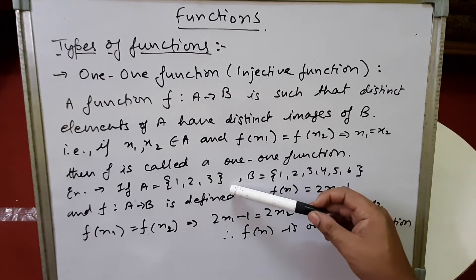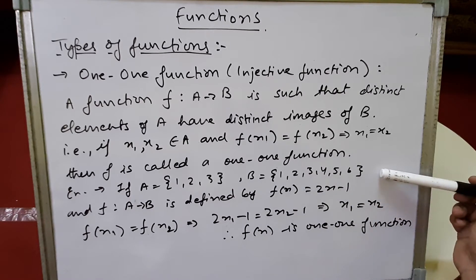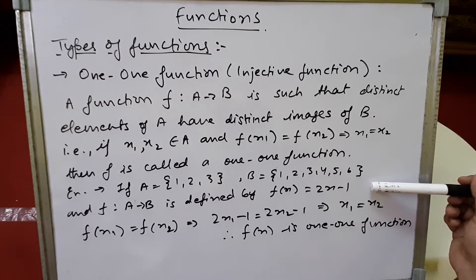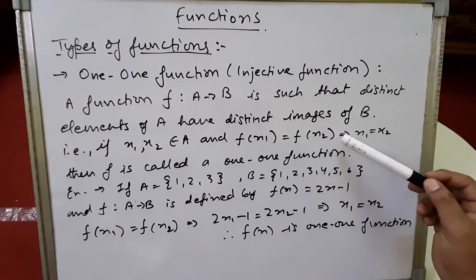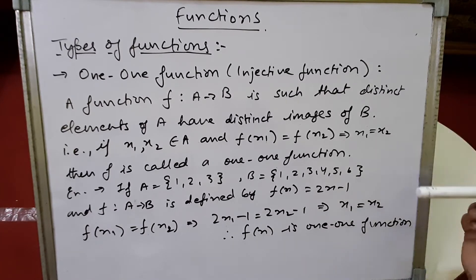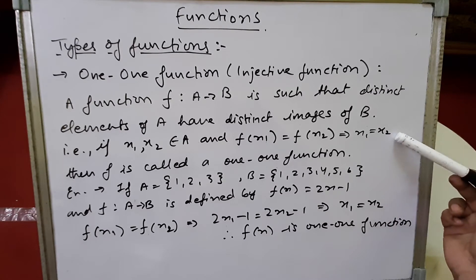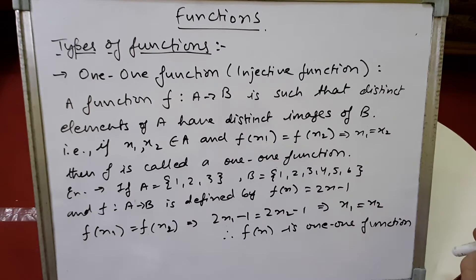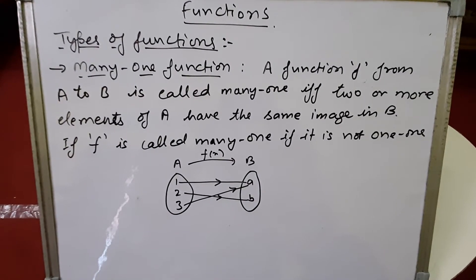Let's see an example. Set A has elements {1, 2, 3} and set B has elements {1, 2, 3, 4, 5, 6}. The function f: A → B is defined by f(x) = 2x − 1. If we set f(x1) = f(x2), we get 2x1 − 1 = 2x2 − 1. Cancelling equal terms gives x1 = x2, so f(x) is a one-one or injective function.